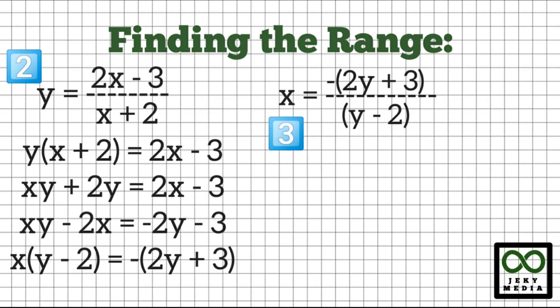Step 3: Replace x by y and all y by x to get the inverse function. This becomes y is equal to the negative value of (2x plus 3) over (x minus 2).